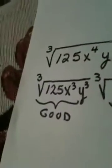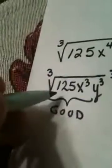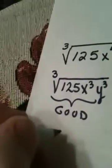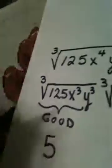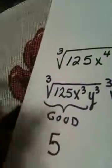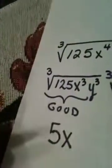Now we can finish the problem. The good part works out pretty. The cube root of 125 is 5. 3 divided by 3 is 1. That leaves me with X to the 1st. I don't need to show the 1.